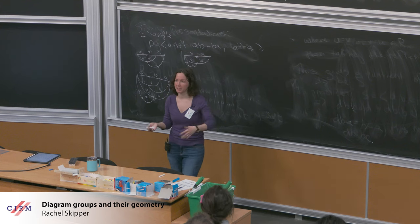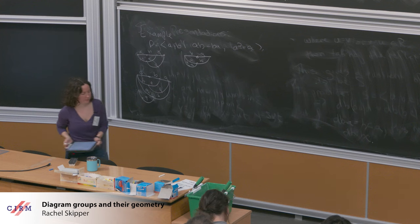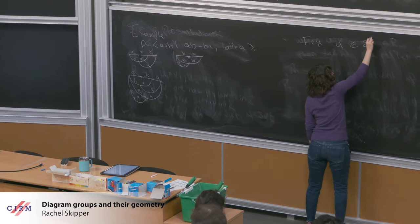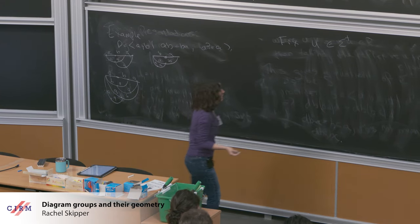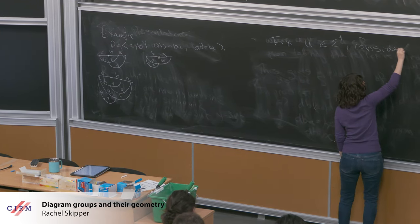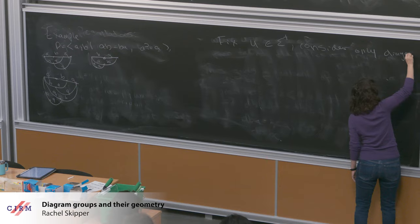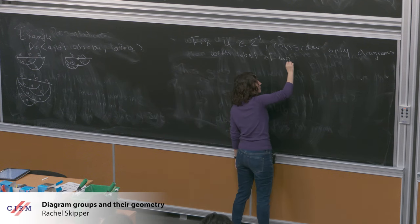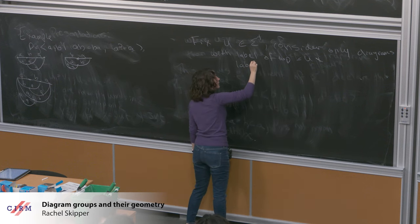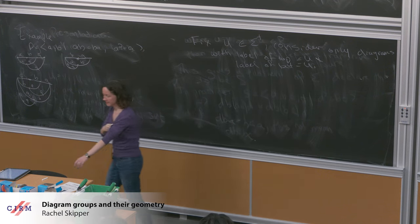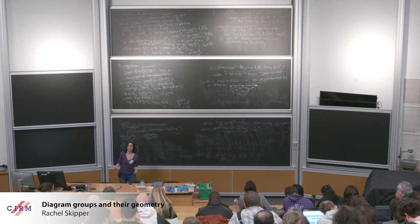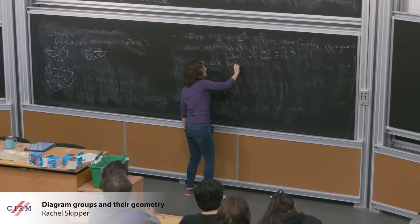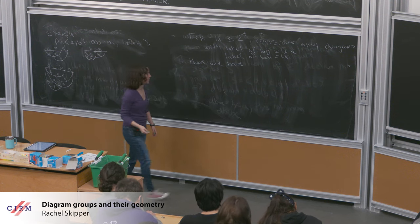In order to always have some multiplication, we need to guarantee our elements have the same top and bottom label. So if we fix some word U in the generating set, we can consider only diagrams with the label of the top being U and the label of the bottom also being U. If I restrict to this collection, I always have a way to multiply things — an associative multiplication that works on all elements — so we have a semigroup.